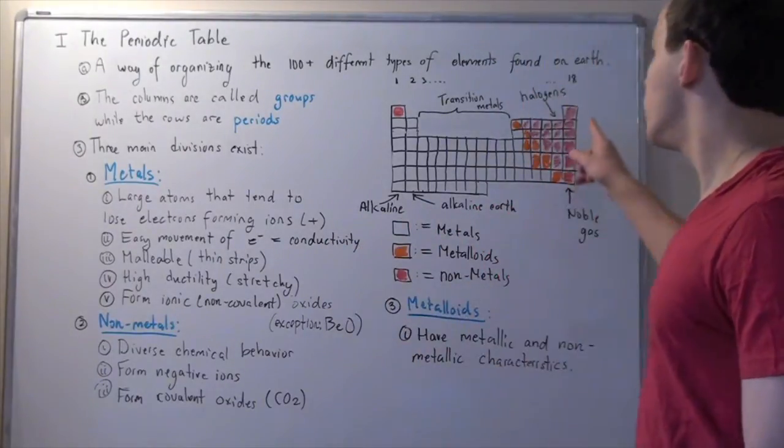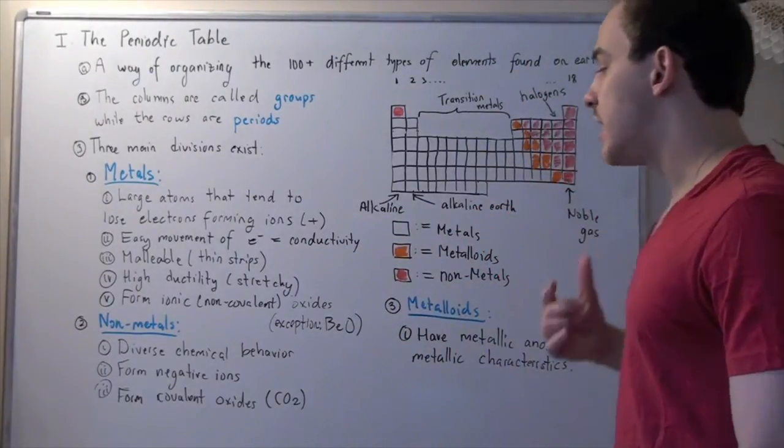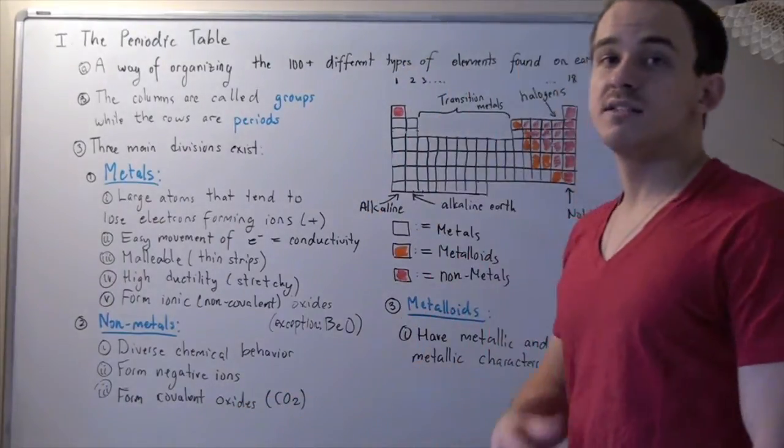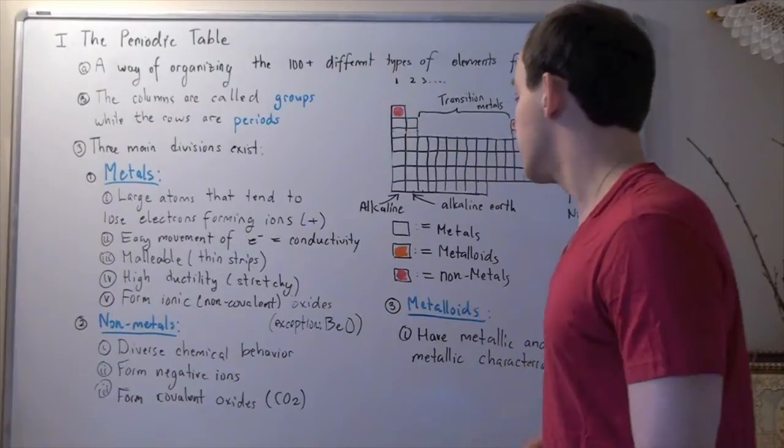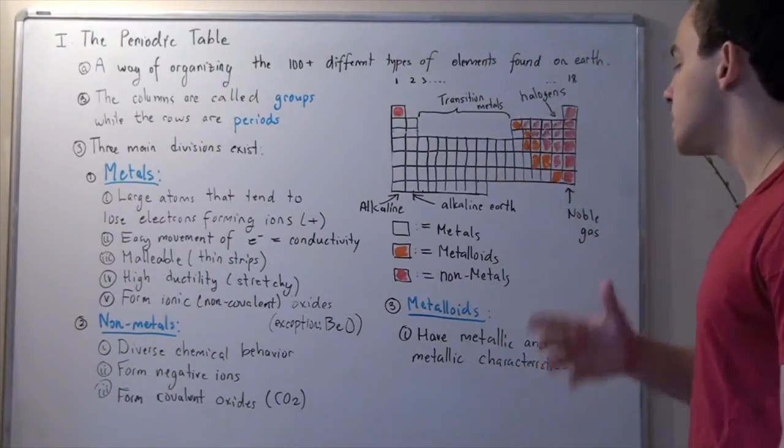Now these guys, when they combine with oxygen, they form covalent oxides. Examples include carbon dioxide or carbon monoxide.